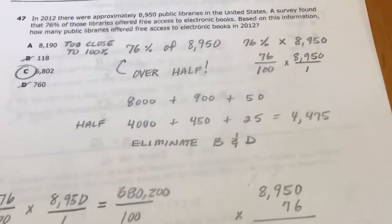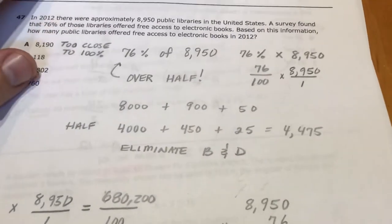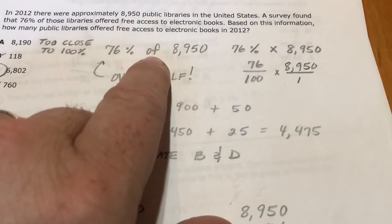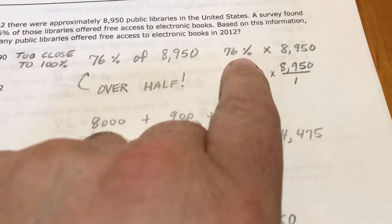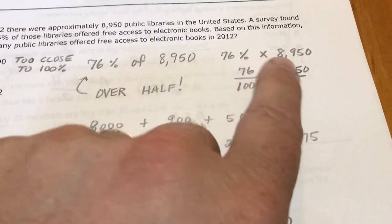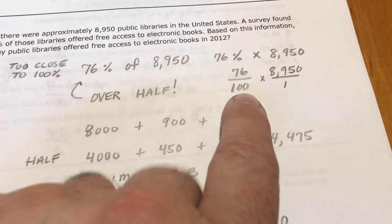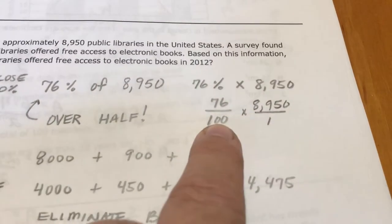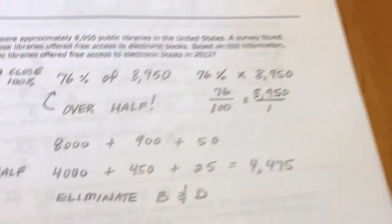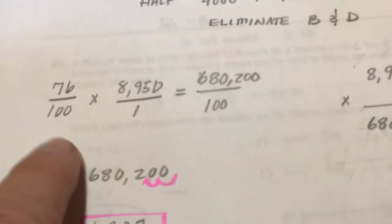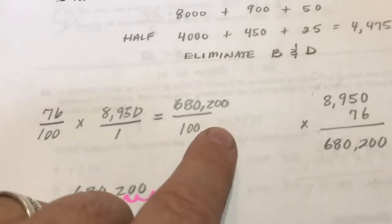So you could answer that question probably without figuring out exactly 76% of it. But 'of' is multiply, so 76% of 8,950 is 76% times 8,950. 76% is just 76 over 100. 8,950 over 1 is just the same as 8,950. So we multiply them, multiply straight across, get 100 down here. Multiply straight across.